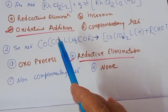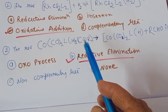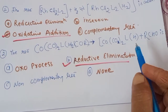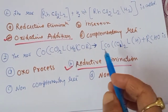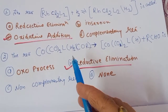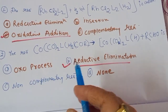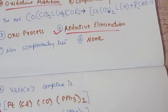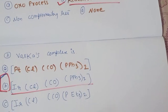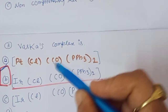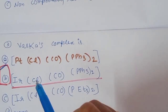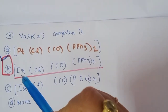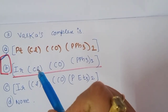Next question: the reaction Co(CO)LH(COR) giving removal of an aldehyde group — which type of reaction is this? We have already studied this — it is a reductive elimination type of reaction. The following question asks about Vaska's complex; the correct answer is B: iridium with chlorine, one carbonyl, and two triphenylphosphine ligands.